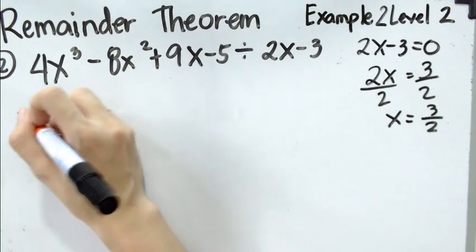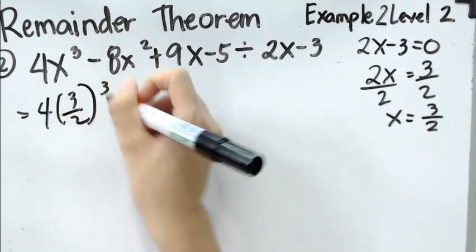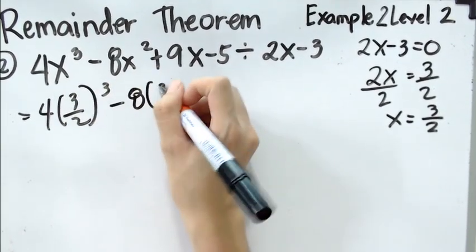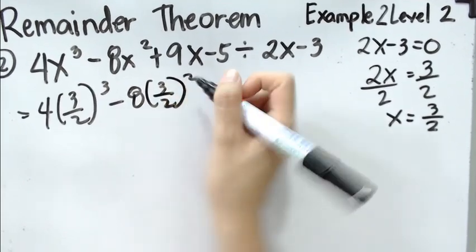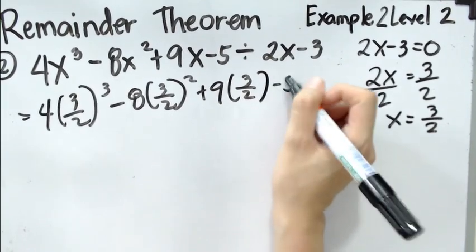So, we have here 4 times 3 over 2 cubed minus 8, 3 over 2 squared plus 9 times 3 over 2 minus 5.